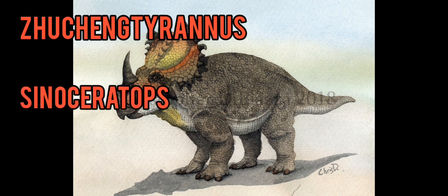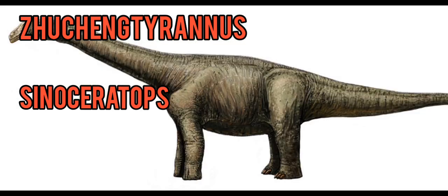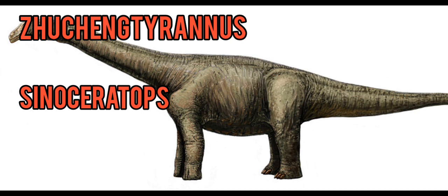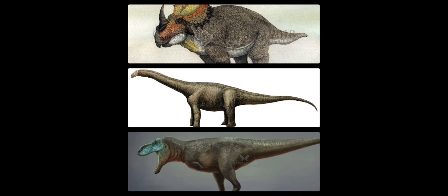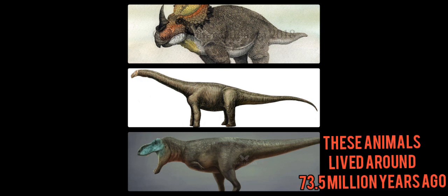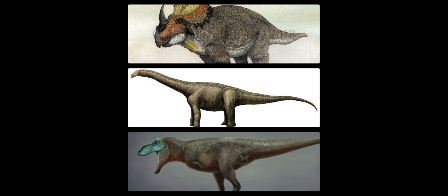Shantungosaurus lived alongside a large tyrannosaurid, a ceratopsian called Sinoceratops, and a large titanosaurid sauropod called Shantungtitan. Remembering that these three animals all lived together at around 73.5 million years ago, we can also see that Shantungosaurus would have lived during the same time.